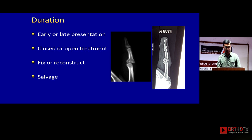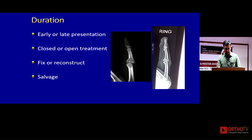Early versus late presentation: usually we will see this at about five to seven days; very rarely on day one. This decides whether you are able to do a closed reduction or an open reduction. An x-ray from the fourth day shows something can still be done without reconstruction or salvage, while a finger presented at six weeks or two months means we've missed the opportunity for a simple procedure.